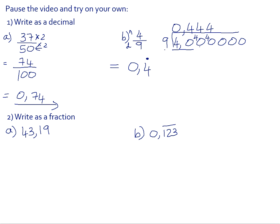Number 2a: writing the decimals as fractions. The first one is not a recurring decimal, so it's straightforward. There are two decimal places, so it will be a fraction over 100, and the numerator is just all the digits in the decimal written together. Number b is a recurring decimal, so we let x equal our recurring decimal: 0.123123 to infinity. Let that equal equation 1.